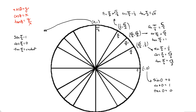You should remember that there are three other trig functions — they're the reciprocals of these three. They are cosecant, which is the reciprocal of sine; secant, which is the reciprocal of cosine; and cotangent, which is the reciprocal of tangent.